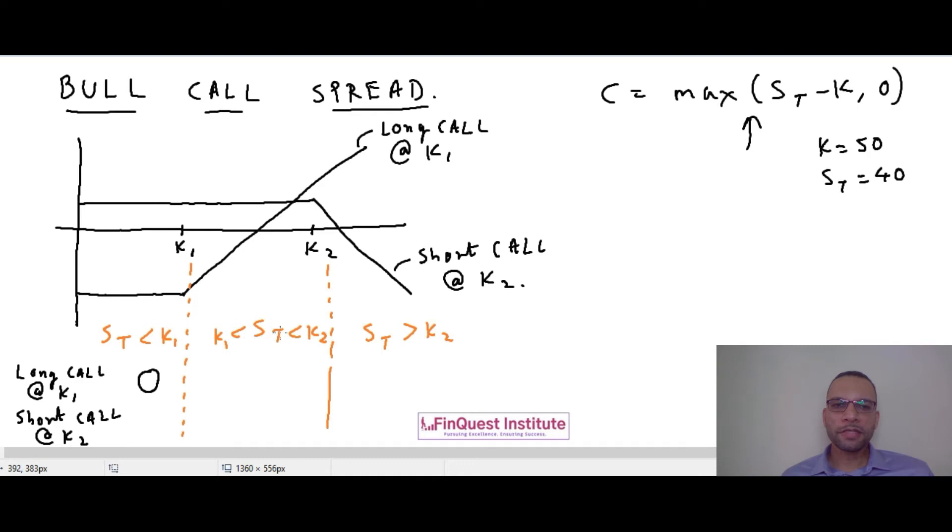Whenever the stock price is between K1 and K2, then yes, I will get a payoff on this because the stock price at maturity has risen above K1. So my payoff is going to be ST minus K1. In scenario 3 as well I'll have a payoff because the stock price is rising, so again my payoff will continue to be ST minus K1.